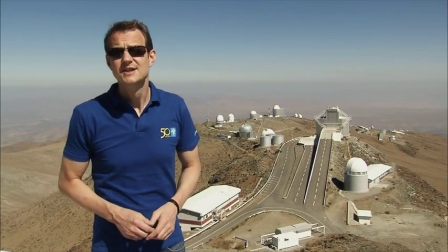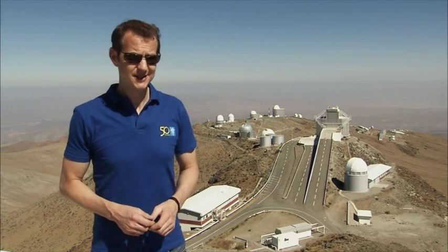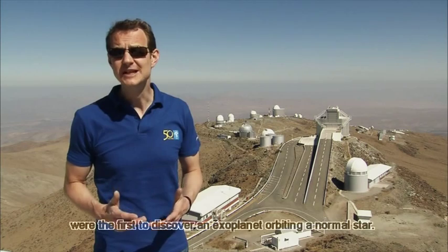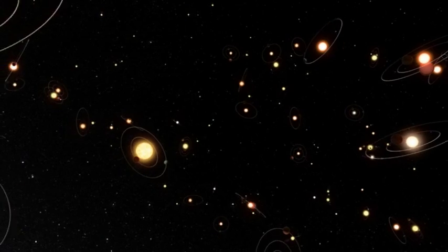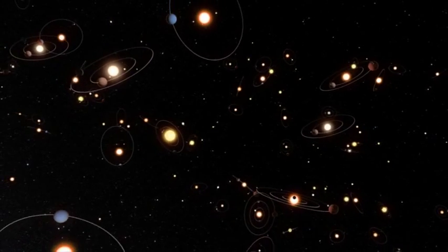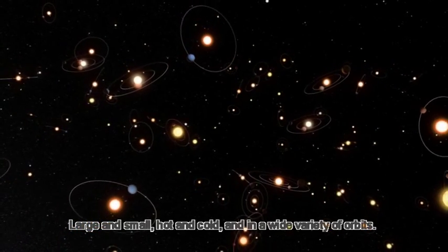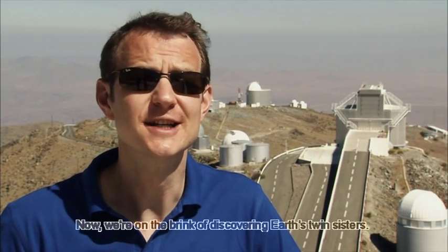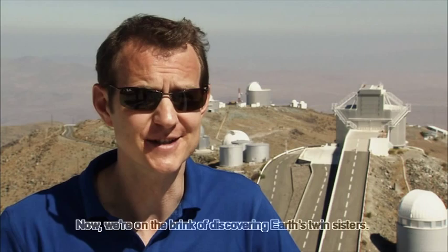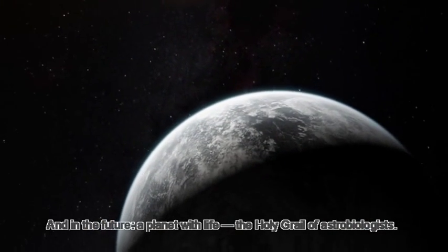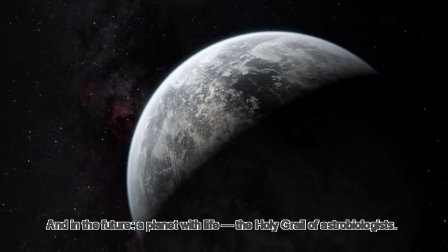In 1995, Swiss astronomers Michel Mayor and Didier Quillot were the first to discover an exoplanet orbiting a normal star. Since then, planet hunters have found many hundreds of alien worlds, large and small, hot and cold, and in a wide variety of orbits. Now we are on the brink of discovering Earth's twin sisters, and in the future, a planet with life—the Holy Grail of astrobiologists.